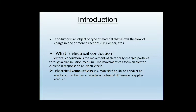Introduction: what is a conductor? A conductor is an object or type of material that allows the flow of charge in one or more directions. The most commonly used example is copper. Electrical conduction is the movement of electrically charged particles through a transmission medium, and this movement can form an electric current in response to an electric field. Electrical conductivity is a material's ability to conduct an electric current when an electric potential difference is applied across it.